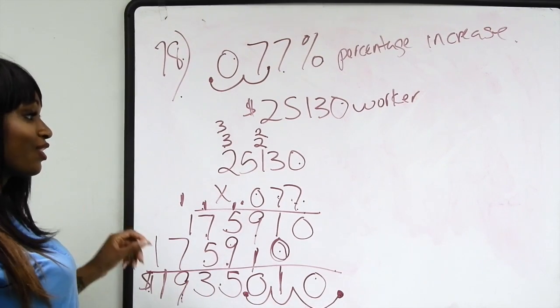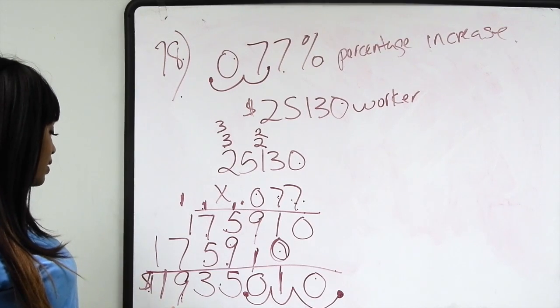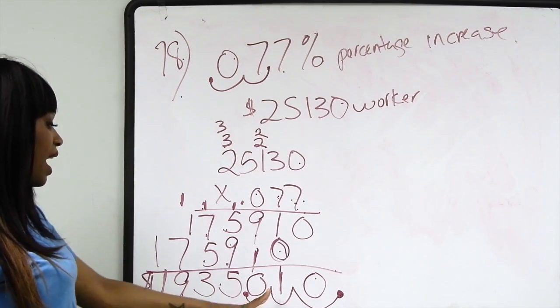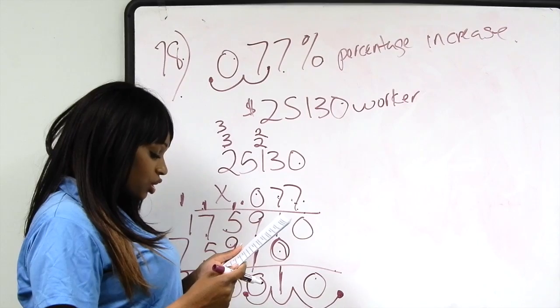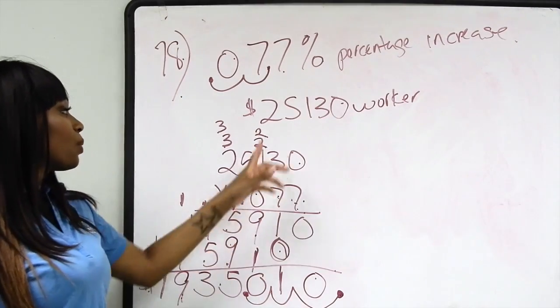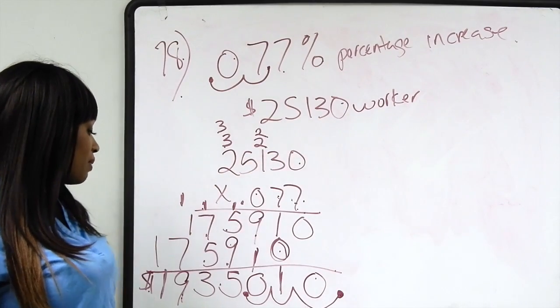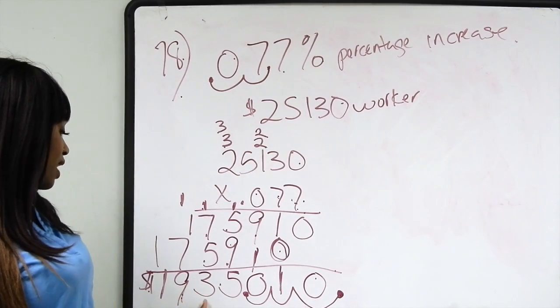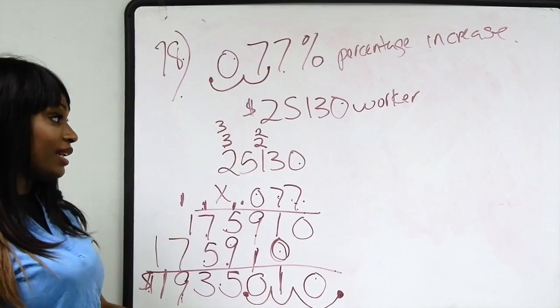The worker's increase in wage is $1,935.01. We're trying to determine the total salary of the worker. We have to take $25,130 and we have to add the $1,935.01.